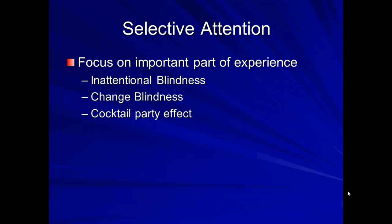Another example is change blindness — what happens when we're not paying attention to things as they change and don't even notice that they changed. This is what was in play in the gorilla example. You did not see the people walking in and out or the exchange of the basketball, and you probably didn't notice the background color changing, because those weren't the things your brain told you were most important.